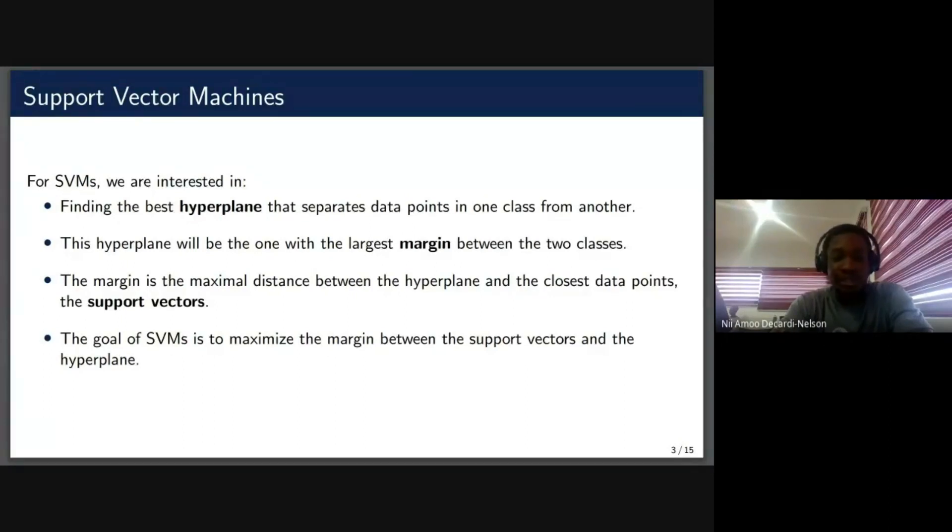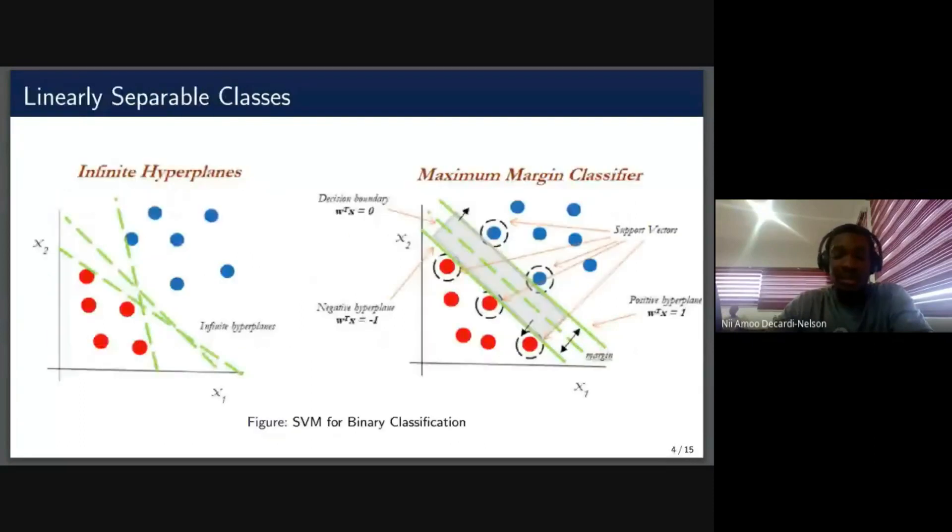So in the end, the support vector machine is supposed to maximize the margin between the support vectors and the hyperplane.